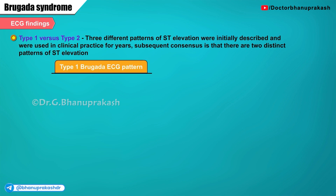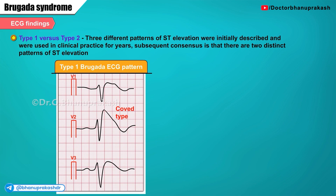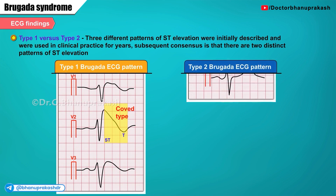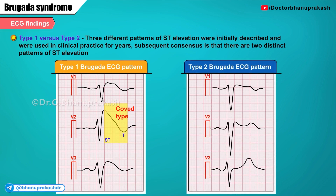In the type 1 Brugada ECG pattern, the elevated ST segment descends with an upward convexity to an inverted T wave. This is referred to as a coved-type Brugada pattern. The name itself makes sense — it is so-called because there is an upward convexity.